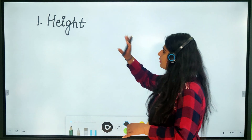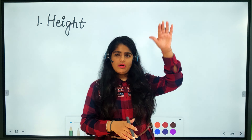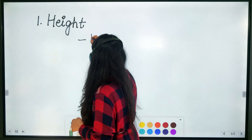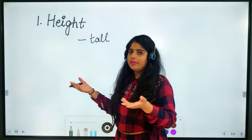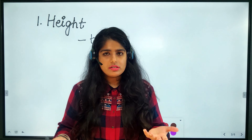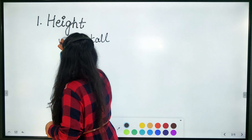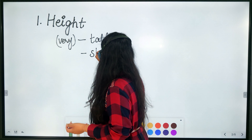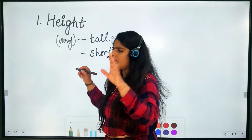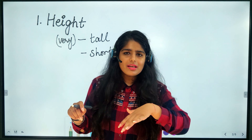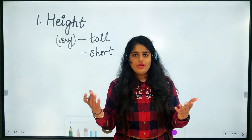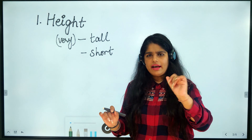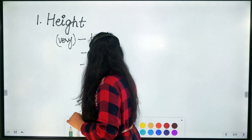We'll firstly start with height. A person may be tall — I can say Amitabh Bachchan is very tall. Then I can say short, for someone who is not so tall. But what if a person is neither tall nor short? I can say that he or she is of medium height or average height.